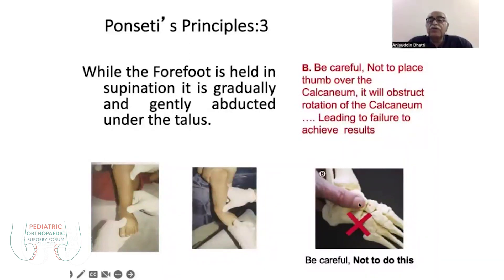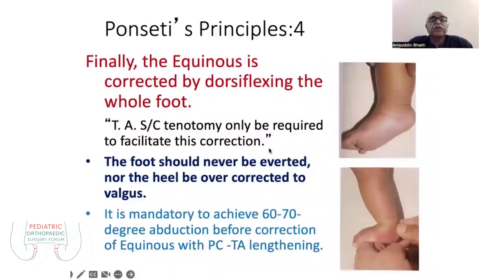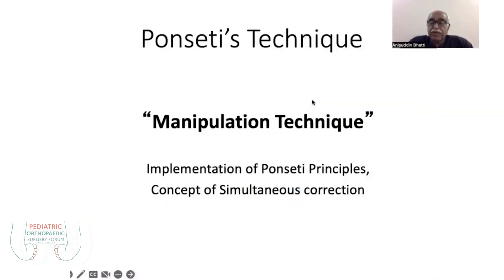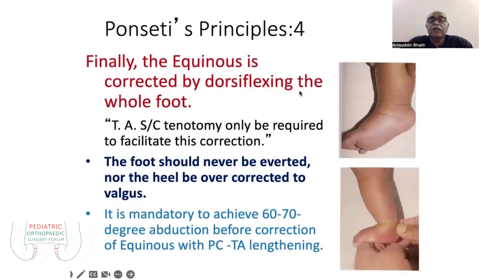Therefore, you should not place the thumb on the calcaneum or on the cuboid, but at the talar head, so as to allow good movement while you move the forefoot. Finally, when you have corrected the adductus deformity by abduction, equinus remains, because the varus of the heel is already corrected.